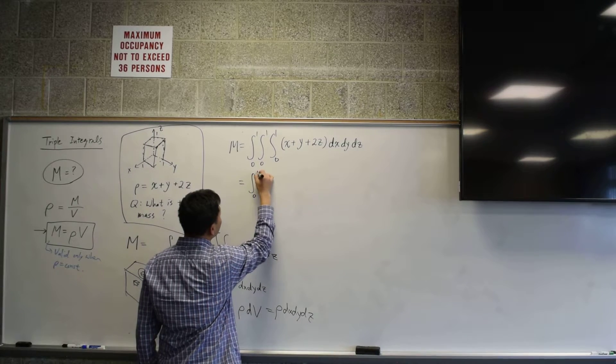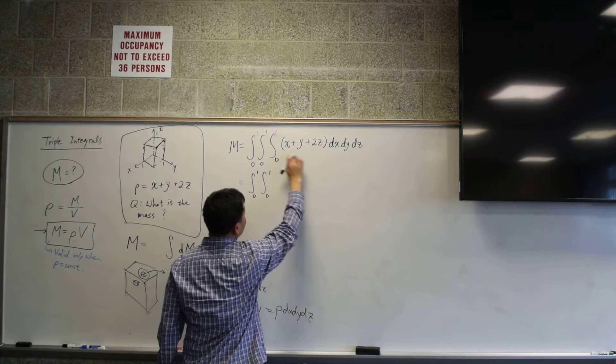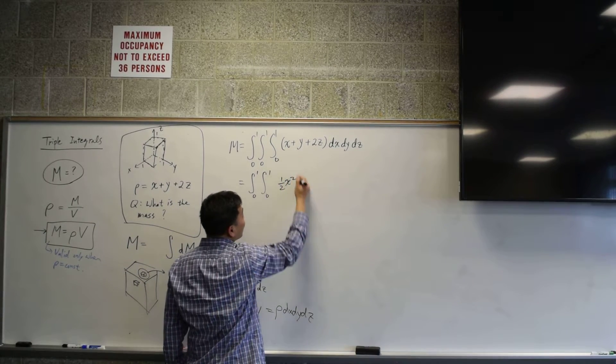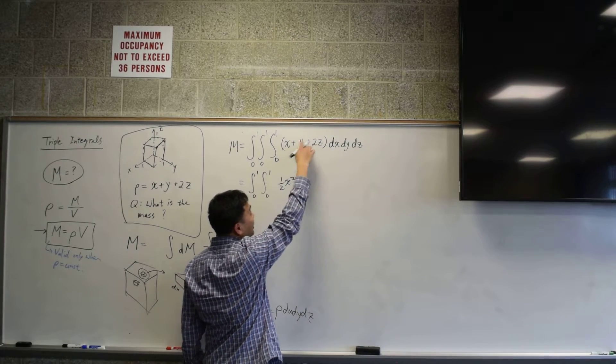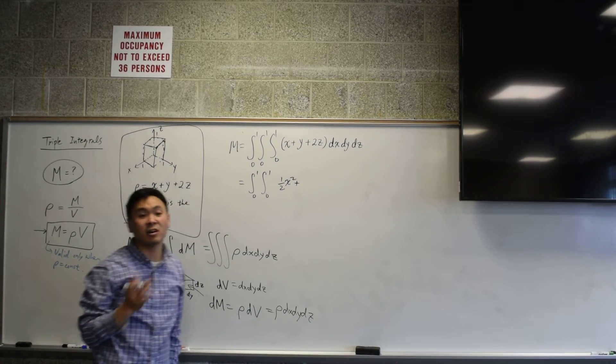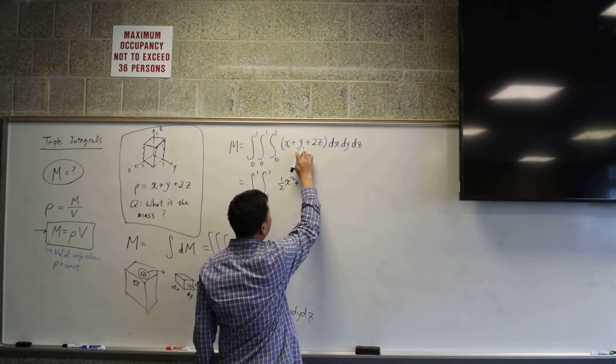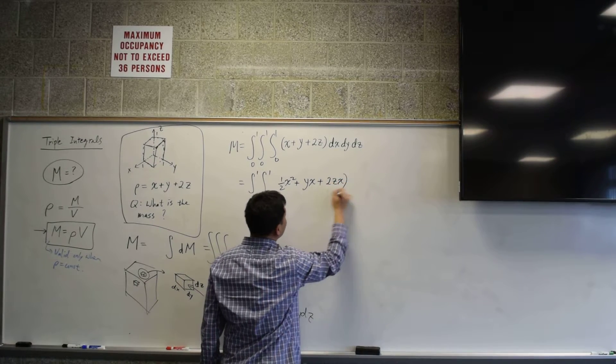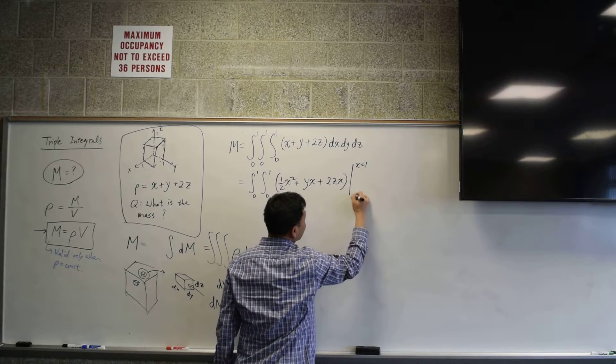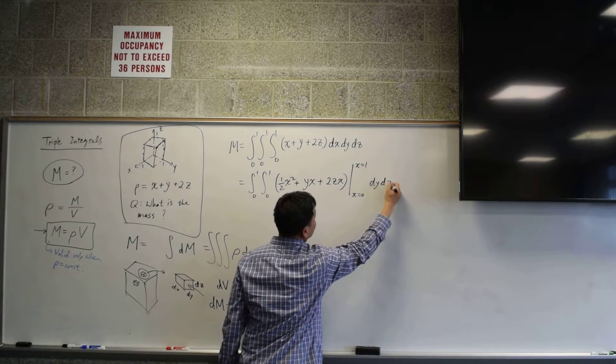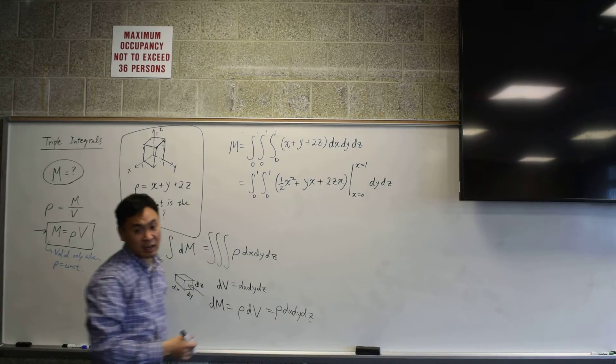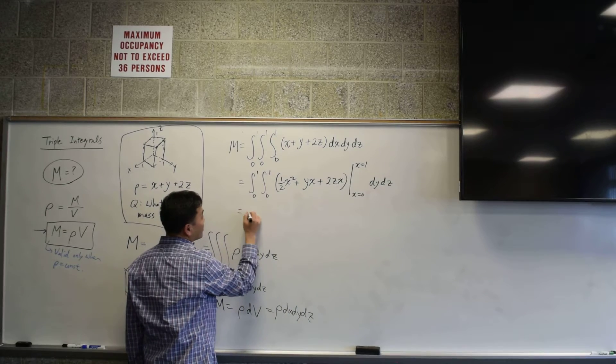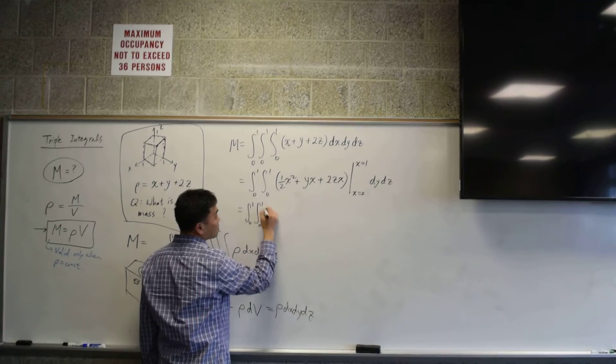So we can calculate zero to one, zero to one. So let's integrate this by x. The integration of x is one half x squared, right? And then when you integrate y, remember, you're integrating by x, so y and 2z are both considered as constants. What do you get if you integrate constant? y becomes yx, 2z becomes 2zx. And then to this, you're plugging in x equal to one and x equal to zero.